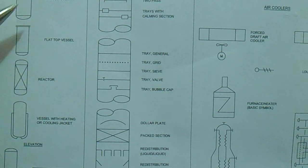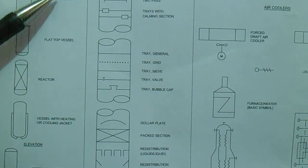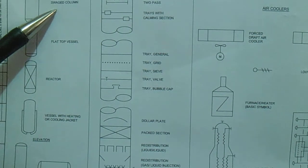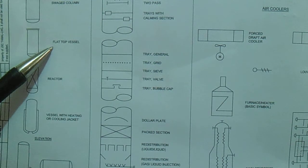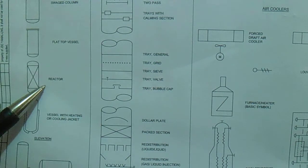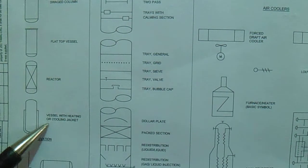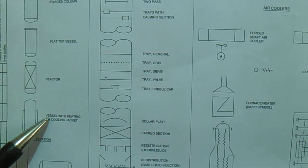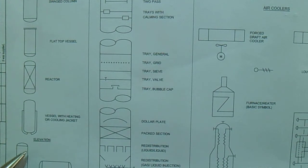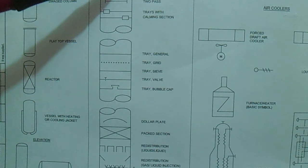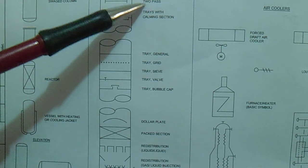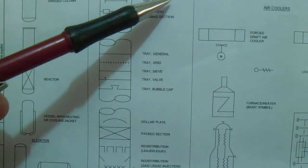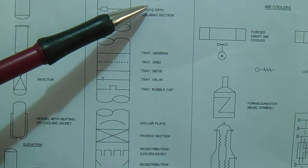Continuing with vessel columns, we have a swaged column, flat top vessel, reactor, and a vessel with heat injecting or cooling jacket.